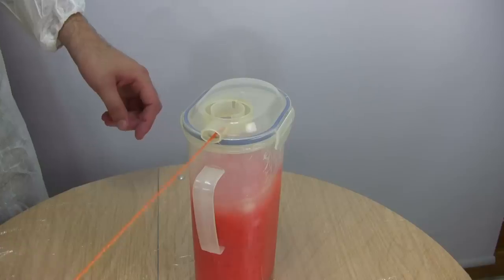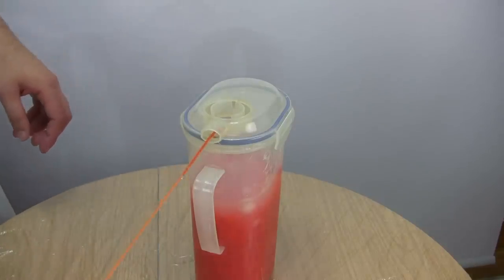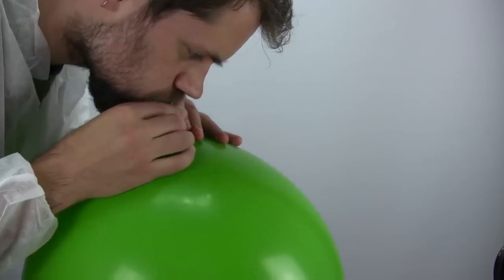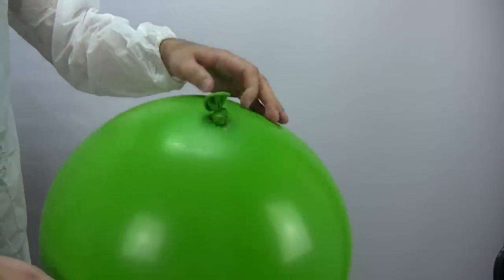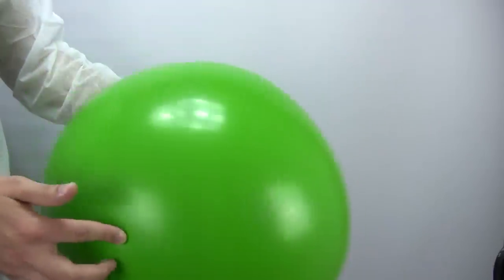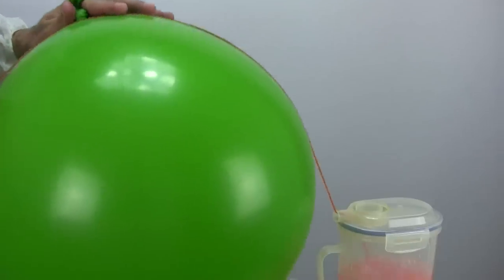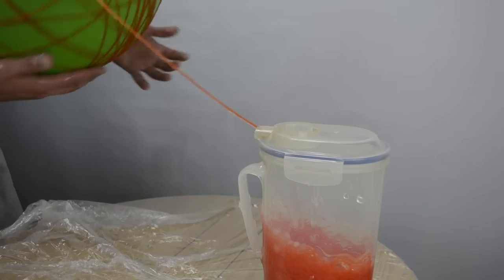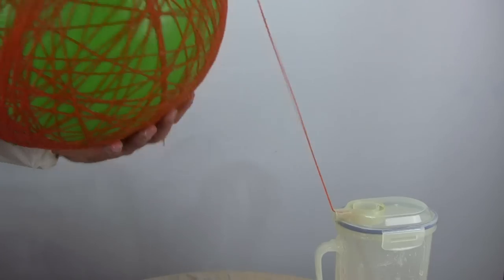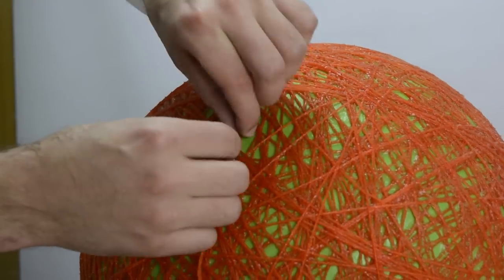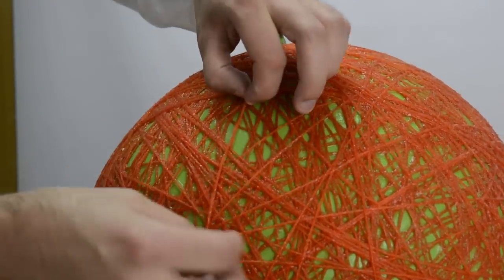When you're done, put the yarn through the spout. Now blow up the balloon and tie a knot. Now cover the balloon with the yarn. When you reach the end, tuck it under other layers of yarn.